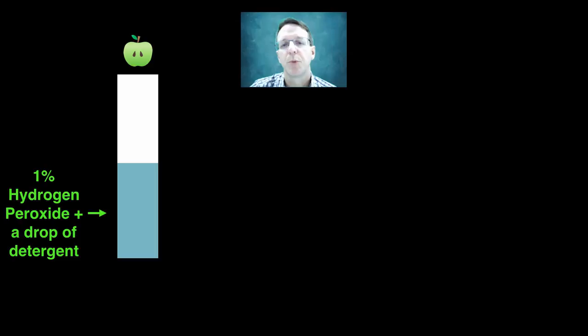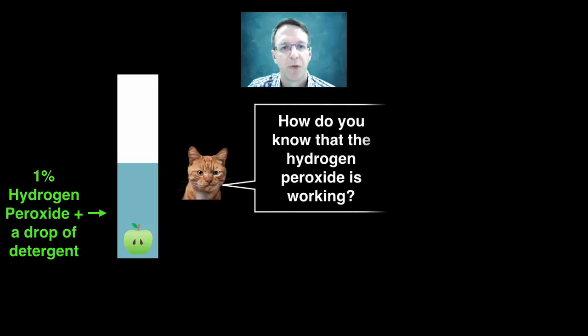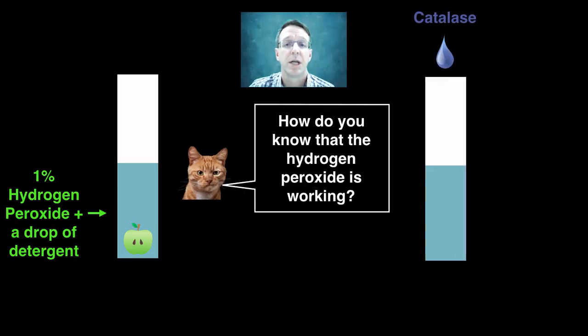But what if the apple piece produced no bubbles at all? Can we conclude that the apple has no catalase? Well, by now you should see the skeptic coming and be ready for his questions. How do you know that the hydrogen peroxide is actually working? Well, you can put his mind at ease by setting up another test where you add a solution of catalase enzyme to the mixture. If it bubbles, then you know that the hydrogen peroxide is just fine.